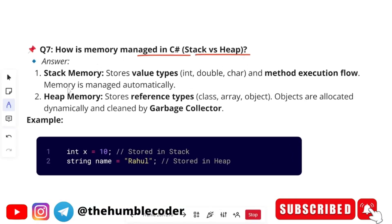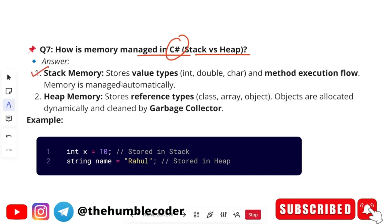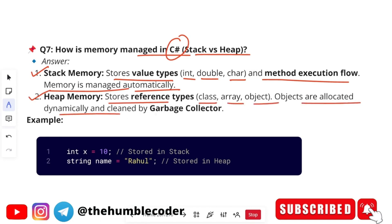Next question: 'How is memory managed in C# — stack versus heap?' Stack memory stores value types like int, double, char, and method execution flow; memory is managed automatically. Heap memory stores reference types — classes, arrays, objects — allocated dynamically and cleaned by the garbage collector. If you want to prepare in more detail, search on Google, understand thoroughly, and write your own answer in a notebook.